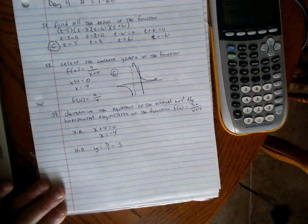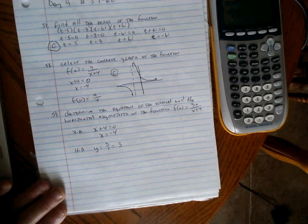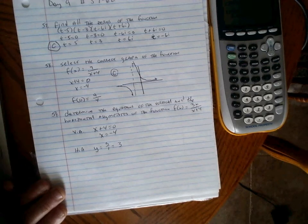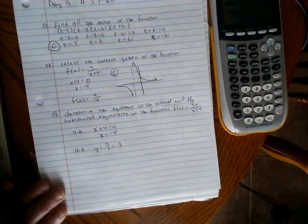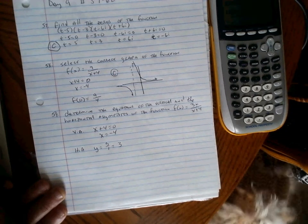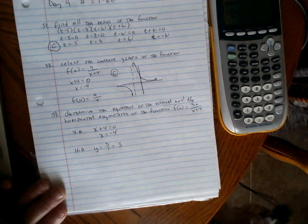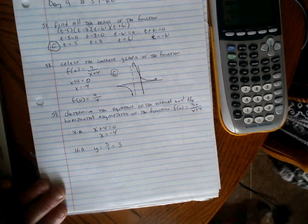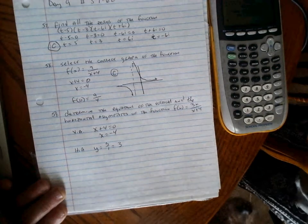The vertical asymptote is x equals negative 4, and the horizontal asymptote is y equals 3.